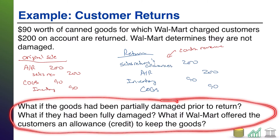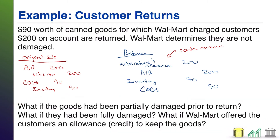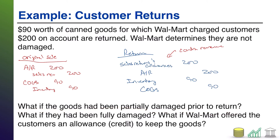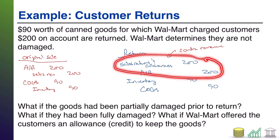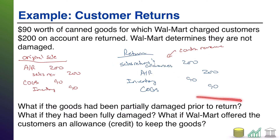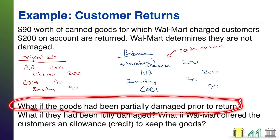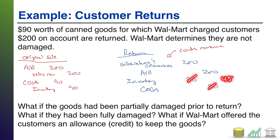Before I get there, let's talk about some what-ifs. First, what if the goods had been partially damaged prior to return? Even if the goods are partially damaged, you still have to give the customer their money back, so the top half of this journal entry wouldn't change. But let's say half of them were bad and half were good — then you'd only put half the value back in your inventory, and you'd only undo half of the expense you incurred. Because if you can't resell that one half of goods you got back, you've still incurred the cost of those goods. That's what happens in the case of a partial damage.